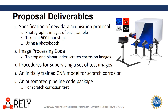The deliverables of the project include specification of data acquisition protocol, which includes the process for photographing our test samples at 500-hour steps using a photo booth. Also included are image processing code to planar index the scratch corrosion images, procedures for supervising a set of test images, an initially trained convolutional neural network model for scratch corrosion, and an automated pipeline for adding data to improve the model.